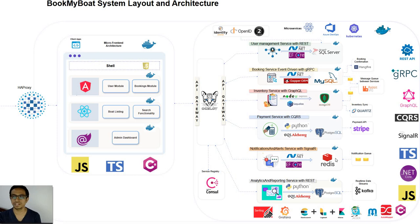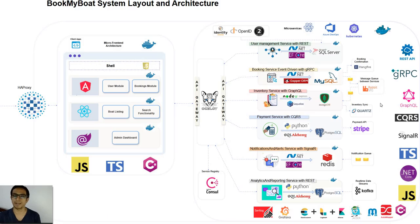We will also have real-time data streams coming into Kafka for our analytics and reporting. There will be an identity server used for authentication and authorization of users. The application will follow REST API, gRPC, GraphQL, and CQRS protocols for application orchestration, using TypeScript, .NET Core, and JavaScript. We will also be using AutoMapper, MediatR, and Jaeger for tracing and logging UI, as well as SeriLog for logging in the application services.